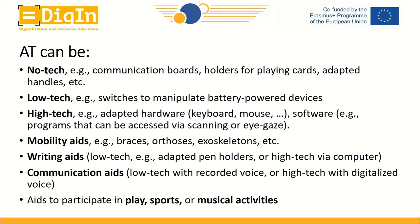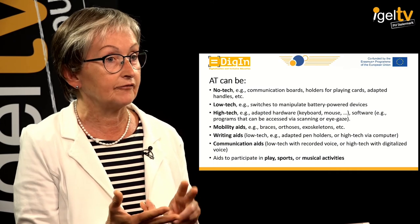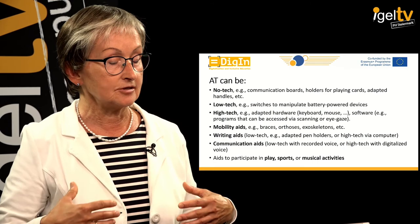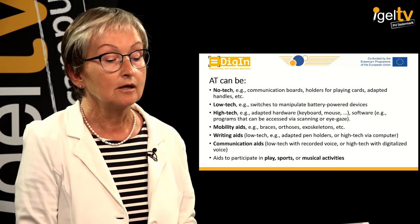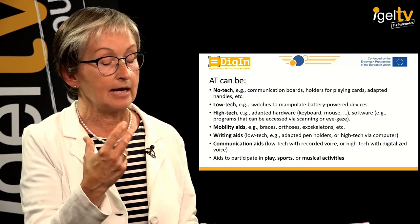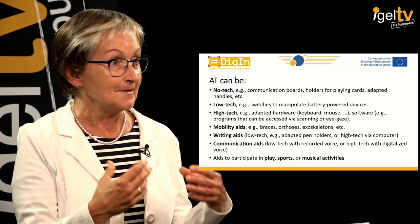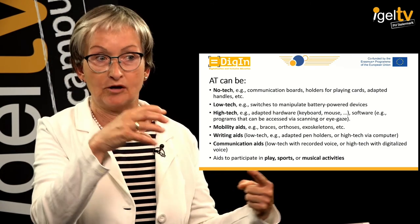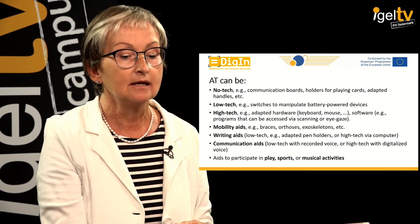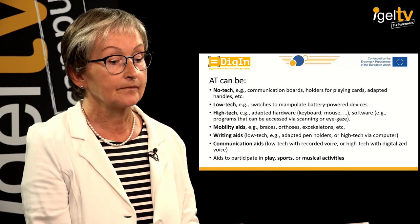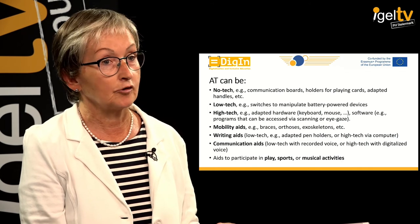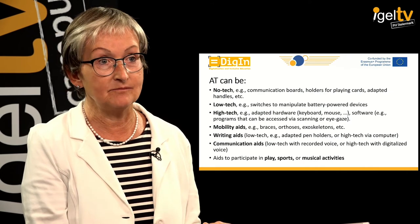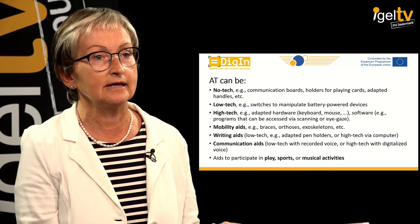Then mobility aids, which would include braces, orthoses, or exoskeletons — fairly new techniques that enable persons who are paralyzed to stand up or even move around. Or any type of writing aids: this might be a simple no-tech pen holder, or even a tennis ball with a pen inserted so a child with motor impairments can grip it, or high-tech writing aids using computers. And then the big area of communication aids, ranging from no-tech to high-tech via computer, and aids to participate in sports and music — such important fields to facilitate inclusion.